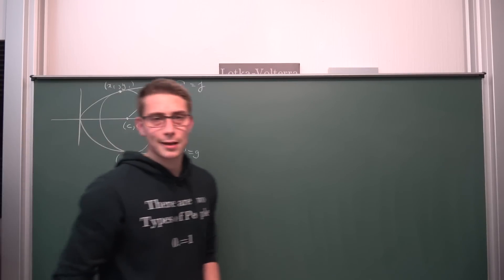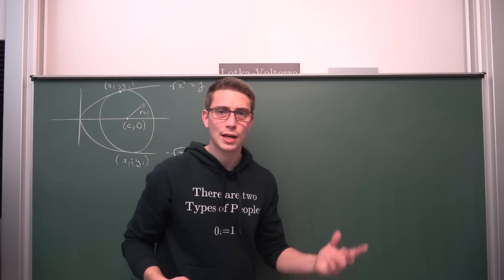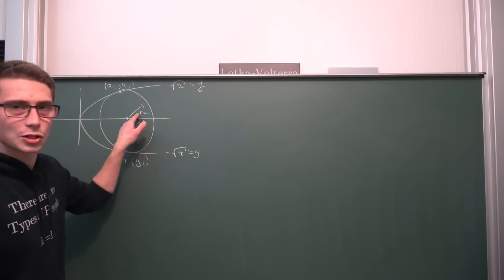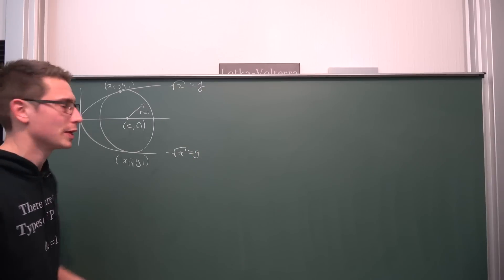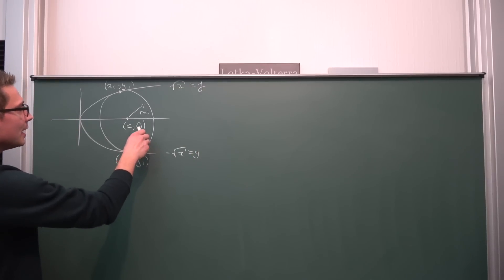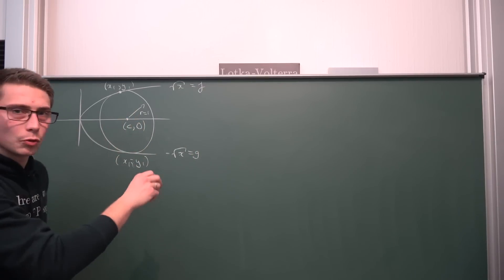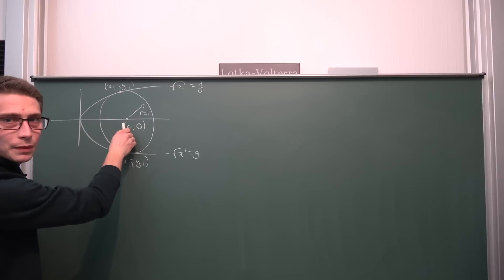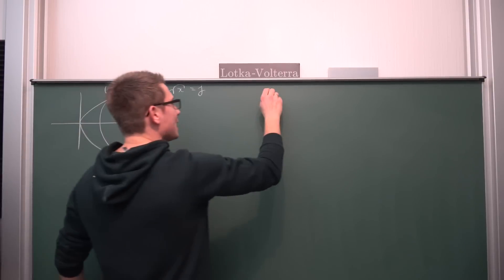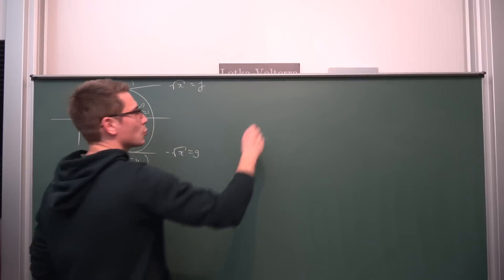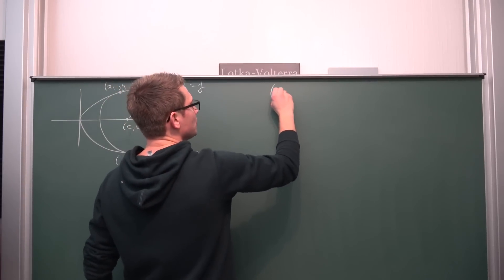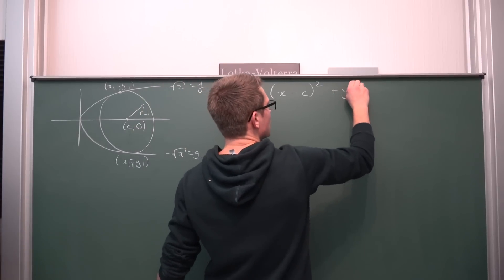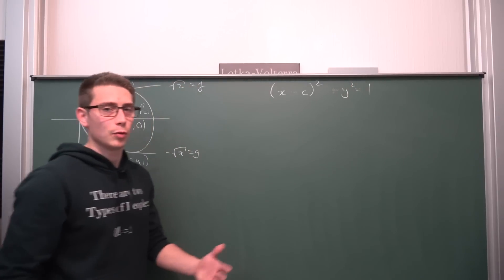The circle in the normal case, if it's centered at (0, 0), has the equation x² + y² = r². In our case r = 1, so we get x² + y² = 1. But our circle is shifted c units to the right. Meaning the equation for the circle becomes (x − c)² + y² = r², in other words equal to 1.